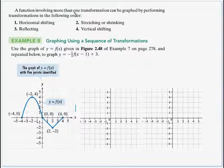A function involving more than one transformation can be graphed by performing the transformations in this order. First, do any horizontal shift. Next, stretch or shrink the graph. Number three, reflect. And then finally, do a vertical shift.